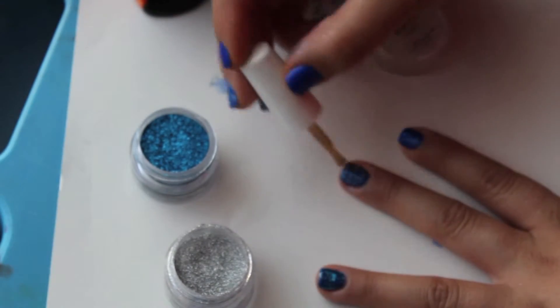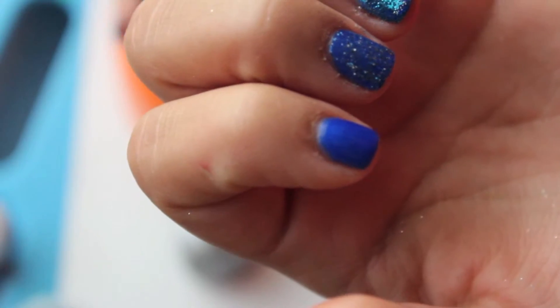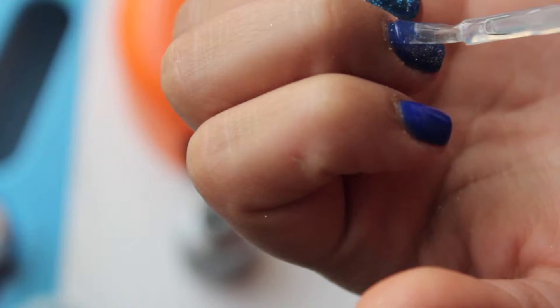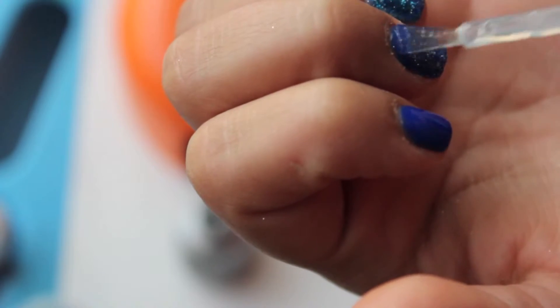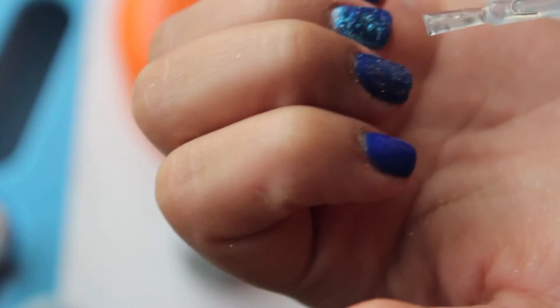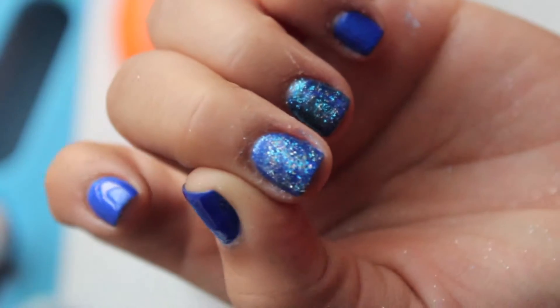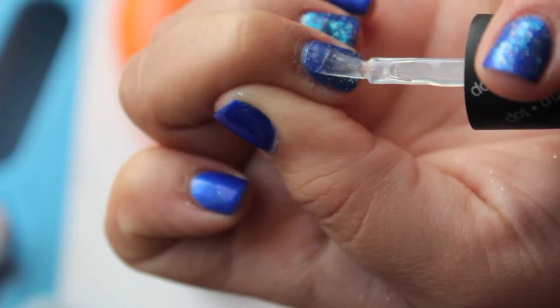Then you see me using a glitter polish, that's the gold one that I have, and I usually put it on top of the loose glitter to seal it off. You don't have to use that, but I like using it. And then to finalize your whole process, you want to apply your topcoat.